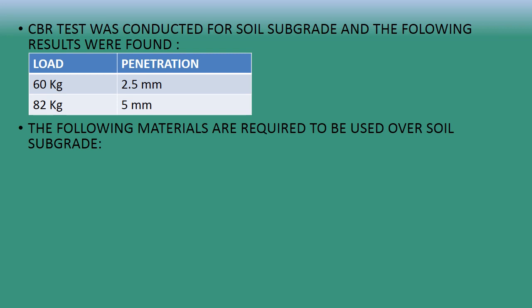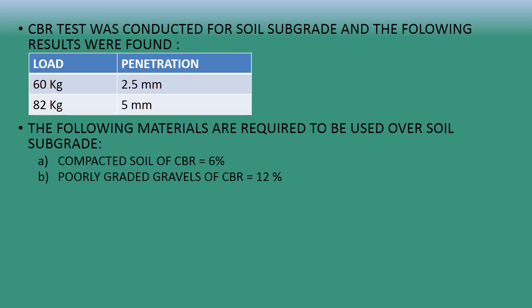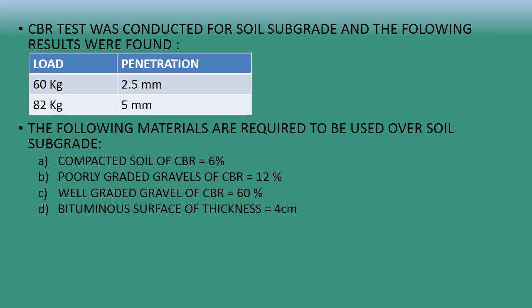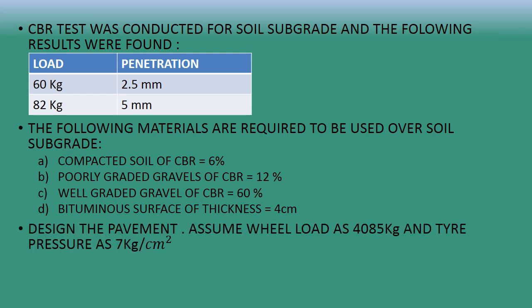The following materials are to be used above the soil subgrade: the first layer is compacted soil of CBR 6%, then poorly graded gravel of CBR 12%, then well graded gravel of CBR 60%, and a bituminous surface of thickness 4 centimeters. Design the pavement assuming wheel load as 4085 kilograms and tire pressure as 7 kg per centimeter square.